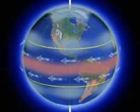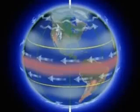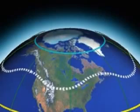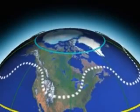At high altitude, air moves without the drag of surface friction. This geostrophic wind moves along rather than across the pressure gradient. The westerly flow of upper air frequently forms undulations called Rossby waves.